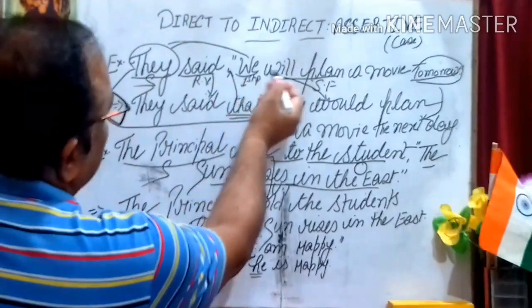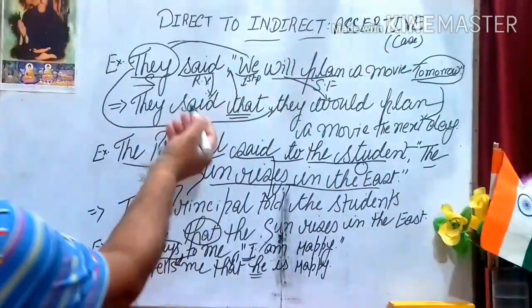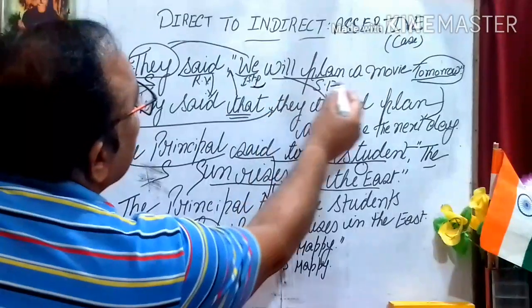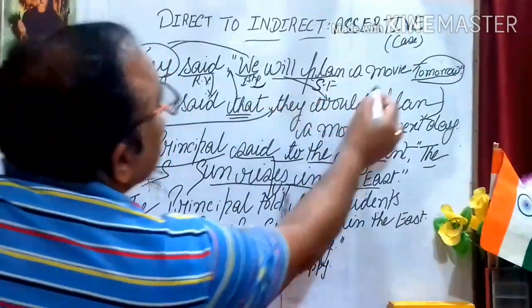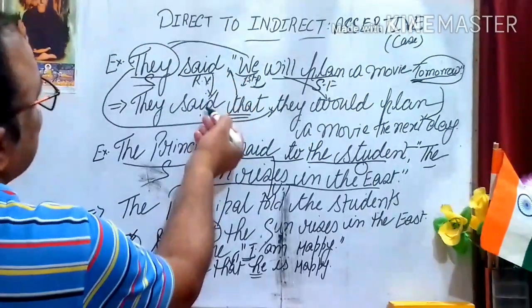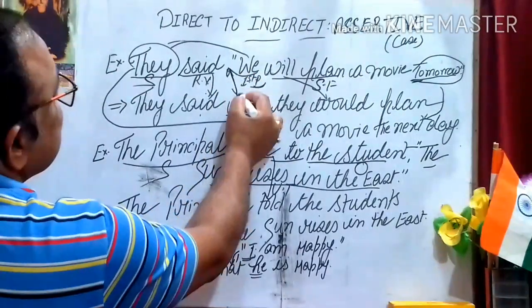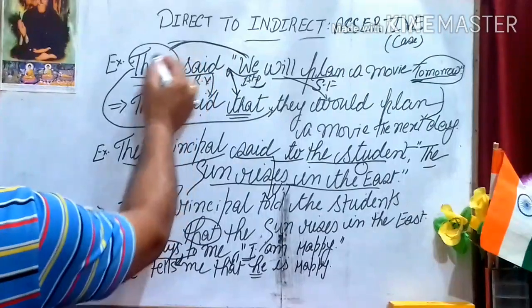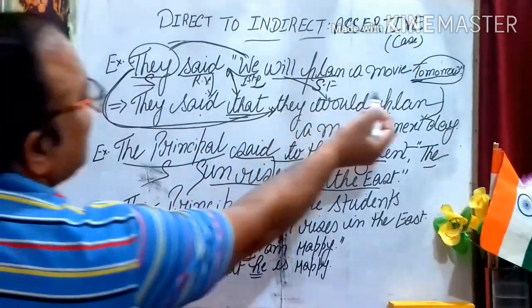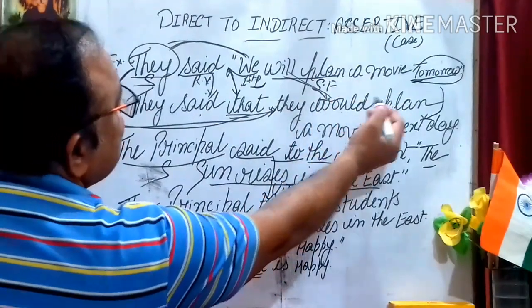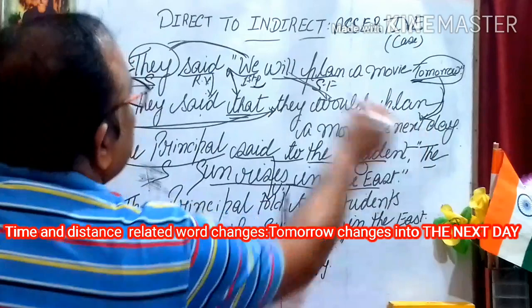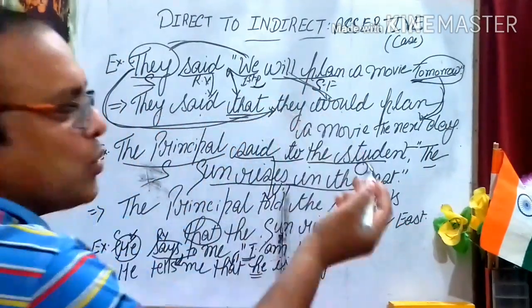Next example: 'They said, we will plan a movie tomorrow.' The subject is 'they', 'said' is the reporting verb, and there is no object. In place of inverted commas, we use 'that'. 'We' is first person plural and changes according to the subject, so 'we' becomes 'they'. 'Will plan' (simple future) changes into 'would plan'. 'Tomorrow' is a time-related word and changes into 'the next day'. So the final indirect speech sentence is: 'They said that they would plan a movie the next day.'